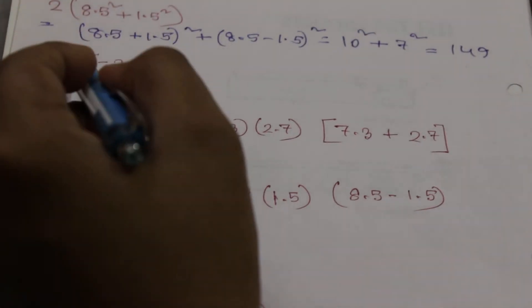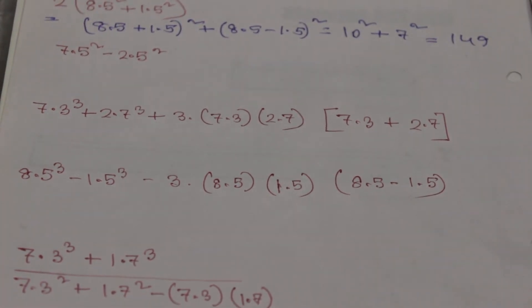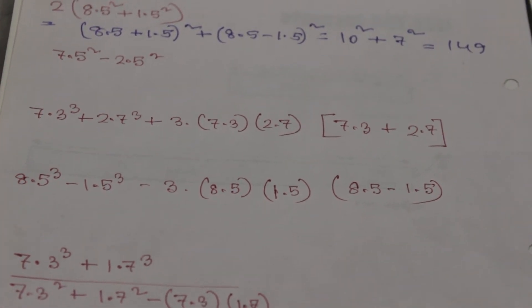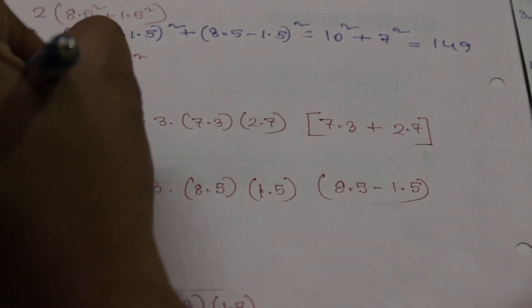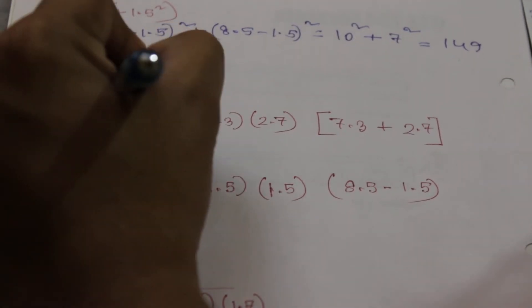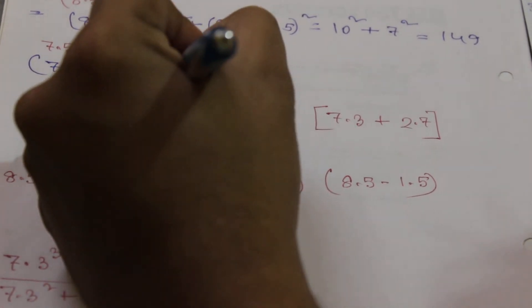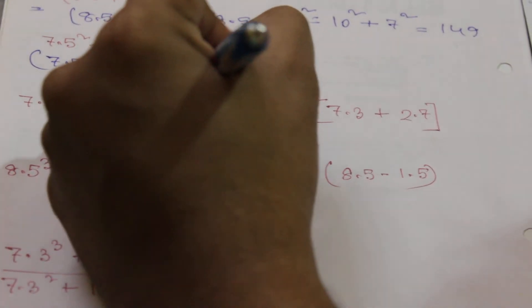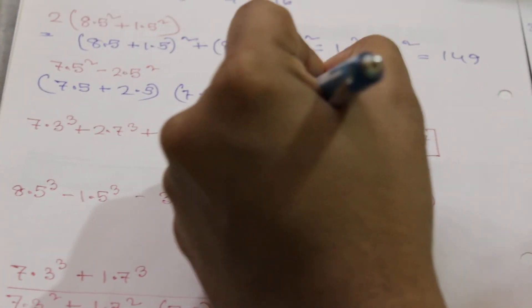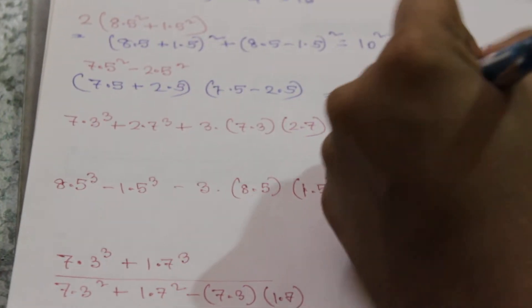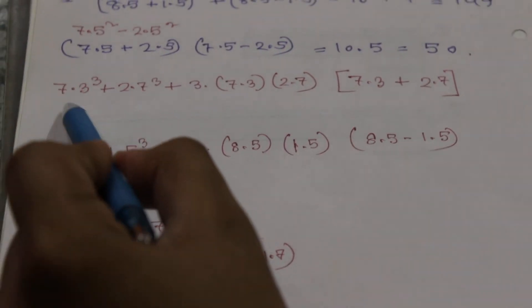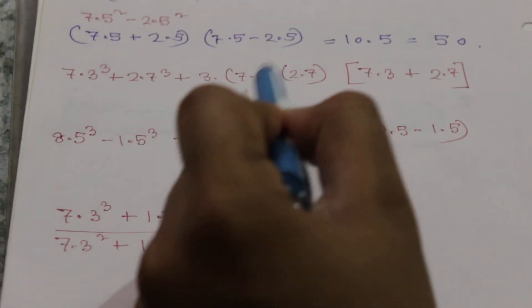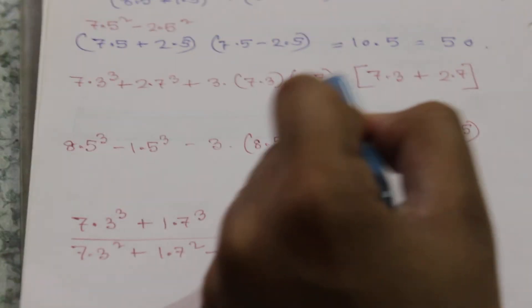The result is 149. The next one is 7.5 square minus 2.5 square. We will use the fifth formula — (a + b) into (a - b) — so the result is (7.5 + 2.5) into (7.5 - 2.5), which equals 10 into 5, giving 50.